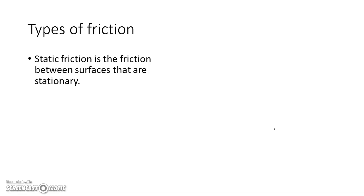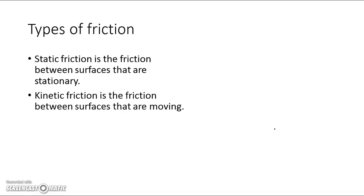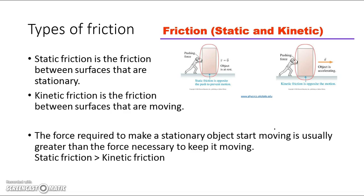There are two main types of friction. Static friction is the friction between two surfaces that are stationary — standing still and not moving. Kinetic friction is the friction between two surfaces that are moving. The static friction between the bottom of an object and the surface it sits on is what keeps it from moving. Once the object is moving, kinetic friction opposes that motion, which is why you still have to keep pushing to maintain movement.